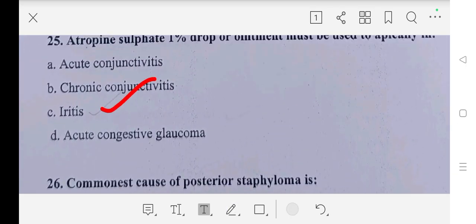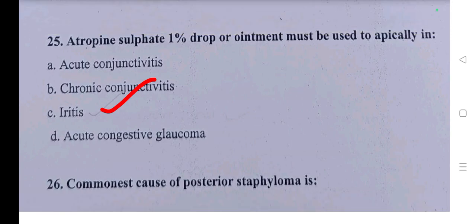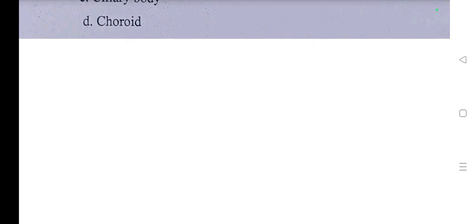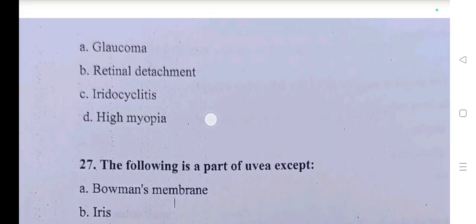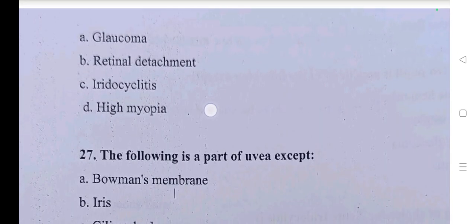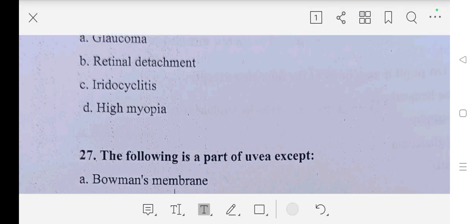Question number twenty-six: commonest cause of posterior staphyloma — options are A part: glaucoma, B part: retinal detachment, C part: iridocyclitis, D part: high myopia. So our answer is D part, high myopia.